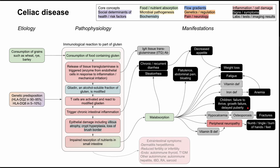This large immunologic pathway often has extra-intestinal manifestations worth knowing. You can have dermatitis herpetiformis — small, punctuate red raised dots on the knees and elsewhere, caused by the same inflammatory reaction as in celiac disease. You can also have reduced fertility or infertility, endocrine disorders like autoimmune thyroid disorders such as Hashimoto's or Graves' disease, type 1 diabetes, autoimmune hepatitis, IBD, rheumatoid arthritis, and sarcoidosis — all associated with celiac disease.